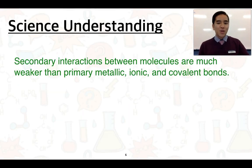Secondary interactions between molecules are much weaker than primary metallic, ionic, and covalent bonds. And we can observe that based on the boiling points and melting points of some of these substances.